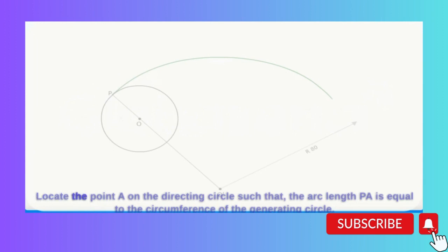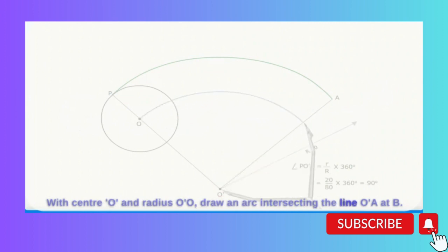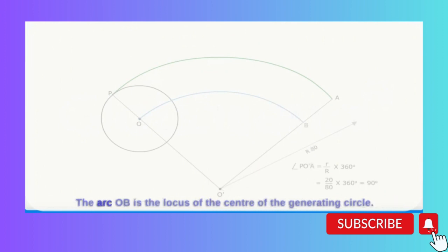Locate the point A on the directing circle such that the arc length PA is equal to the circumference of the generating circle. With center O' and radius O'A, draw an arc intersecting the line O'a at B. The arc OB is the locus of the center of the generating circle.